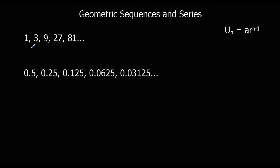These are two examples of geometric sequences. In the first one, you always multiply the previous term by 3 to get the next term. So it's 1 times 3 gives 3, 3 times 3 gives 9, 9 times 3 gives 27, and so on. So we've got a common ratio, so that is a geometric sequence.